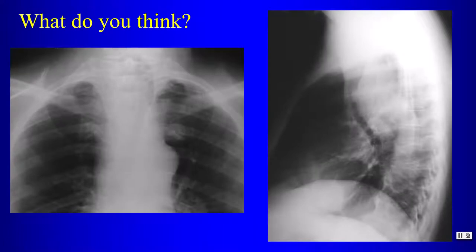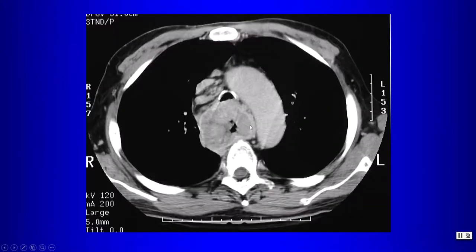Next case showing tracheal deviation, especially on the lateral view, with soft tissue impinging on or invading the posterior tracheal wall. What lives behind the trachea? The esophagus. We need to be concerned about esophageal neoplasm — on CT there is circumferential narrowing of the esophagus, confirming esophageal cancer.